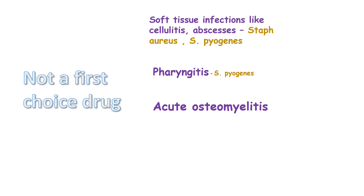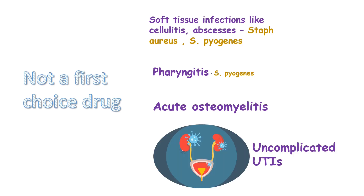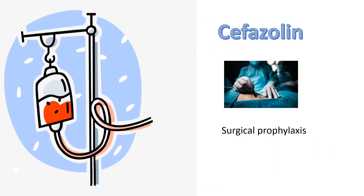First generation cephalosporins are used in acute osteomyelitis caused by Staphylococcus aureus, Streptococcus pyogenes, and Streptococcus pneumoniae. Cefazolin, initially followed by oral cefalexin, is an alternative to penicillinase-resistant penicillins in acute osteomyelitis. Some experts recommend using cefazolin with clindamycin where MRSA prevalence is high. First generation cephalosporins are also used for uncomplicated urinary tract infections caused by E. coli, Klebsiella, and indole-negative Proteus. Cefazolin is the cephalosporin of choice for surgical prophylaxis.